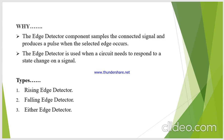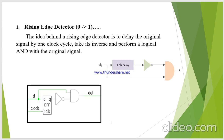This either edge detector means it can detect both positive edge and negative edge at the same time. The rising edge detector will detect when there is a state transition from 0 to 1. The idea behind a rising edge detector is to delay the original signal by one clock cycle and take its inverse and perform the logical AND with the original signal.